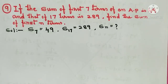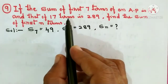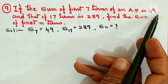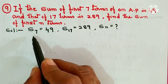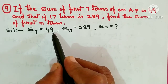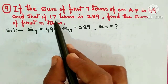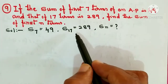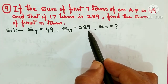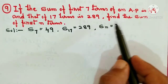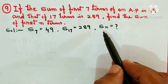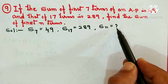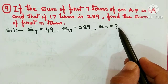Question number 9. If the sum of first 7 terms of an AP is 49, so S7 is equal to 49, and that of 17 terms is 289, S17 is equal to 289. Find the sum of the first n terms — Sn is equal to question mark.